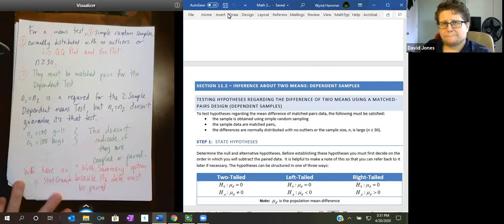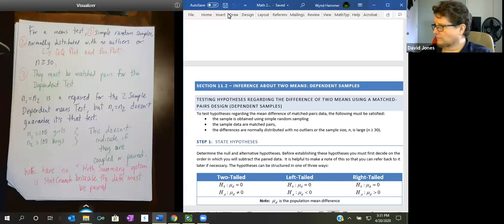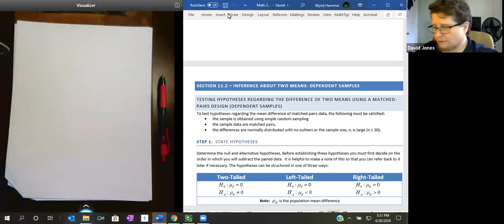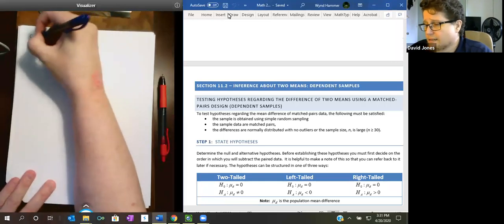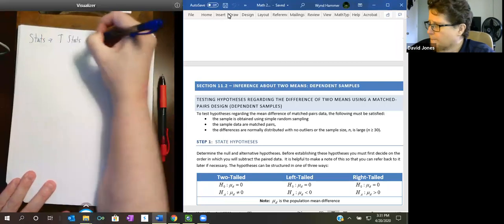This is unique for this type of test. We have no summary data option in StatCrunch because the data has to be paired. So that means don't sort the columns. Like if you do 30 hotels and record prices, keep the same town in the same line. When we do this in StatCrunch, our choice is Stats, T Stats, Paired.